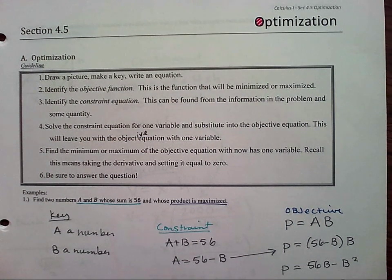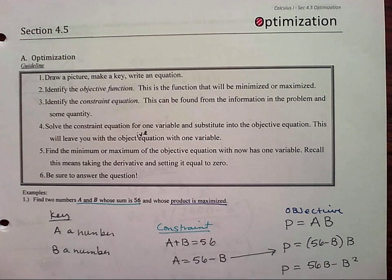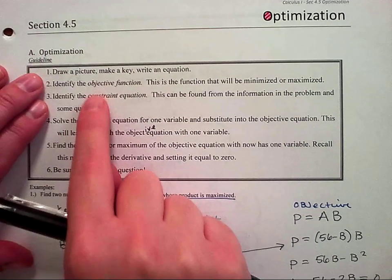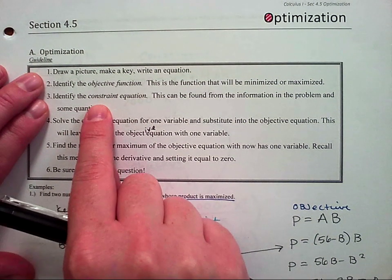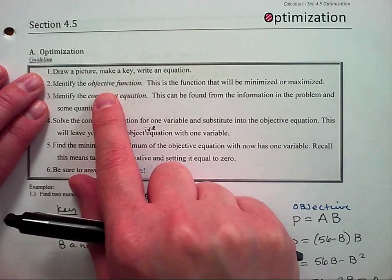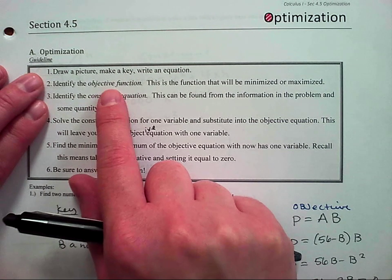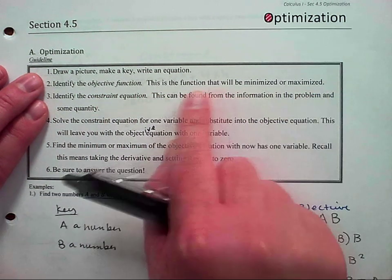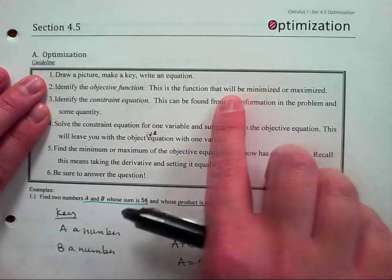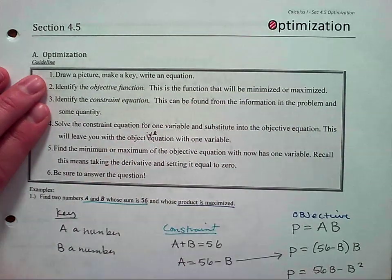Draw a picture, write a key, write an equation. We're going to have two equations: an objective equation and a constraint equation. The objective function is the function that would be maximized or minimized. That typically shows up in the last sentence — find the maximum of this, find the minimum of this, what's the largest, what's the smallest.